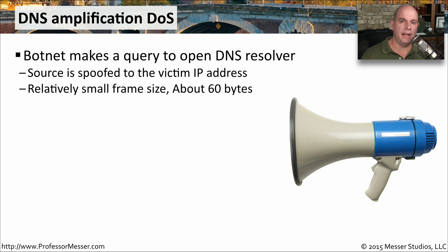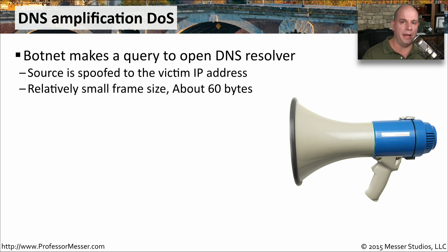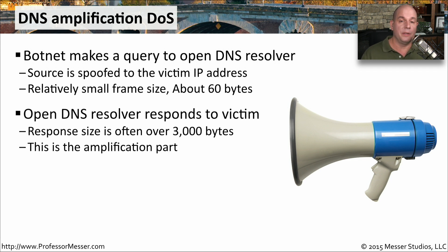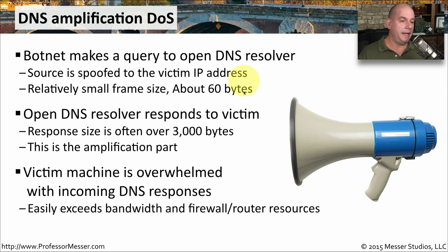A more modern DDoS amplification attack takes advantage of DNS. A botnet is instructed to send a DNS query to an open DNS resolver — one that accepts queries from any device on the internet — using spoofing to change the source IP address to the victim's address. The small frame size sent to the DNS server is about 60 bytes, but the response can be very large, in some cases thousands of bytes. So we're able to send very small information in and have a very large amount — up to 3,000 bytes — sent to the victim IP address.